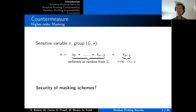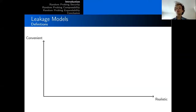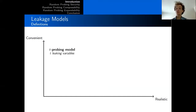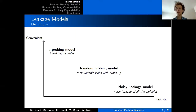To reason about the security of masking schemes in theory, the community introduced what we call leakage models. An algorithm is said to be secure in a leakage model if the leaking variables do not reveal any information about the secrets. There are three main models: the probing model, where there is a fixed number of t leaking variables; the random probing model, where each variable leaks with a probability p; and the noisy leakage model, where all variables leak with some noise.